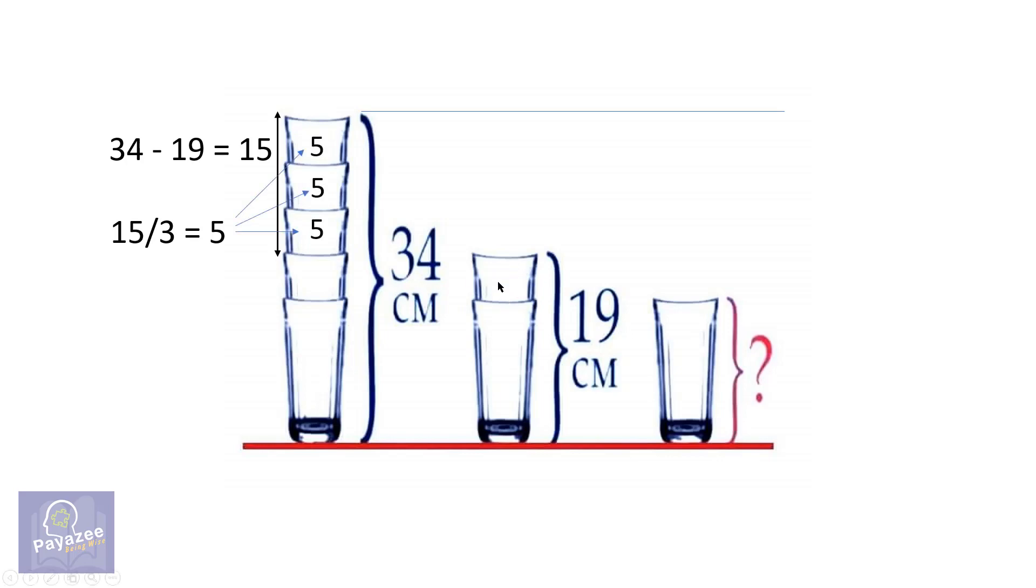So the visible part of each glass is 5 cm. The answer to our puzzle is 19 minus 5, which equals 14 cm.